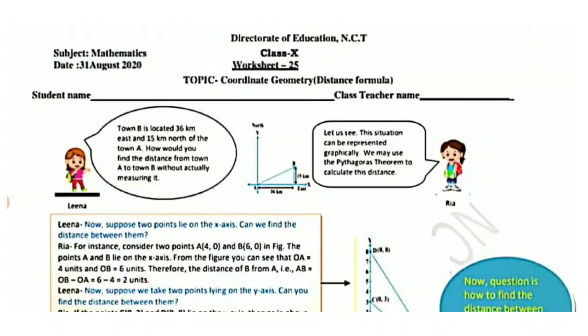Ria says: let us see — this situation can be represented graphically. We may use the Pythagoras theorem to calculate the distance. You can see in the figure where town B is located. Ria says we can find the distance with the Pythagoras theorem — and absolutely, Ria is right. With the help of the Pythagoras theorem, we can find the distance.